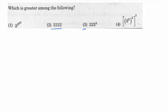Now the next problem. We have 4 numbers in different forms. Which is the greatest number? We need to identify the values. The second one is already 2222. The third one is 222 squared. What is the value of 222 squared? 222 into 222 — we get 49,284.